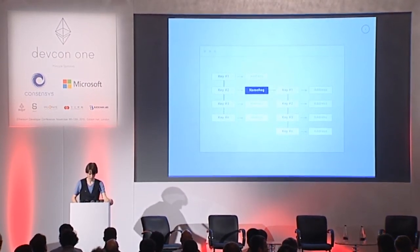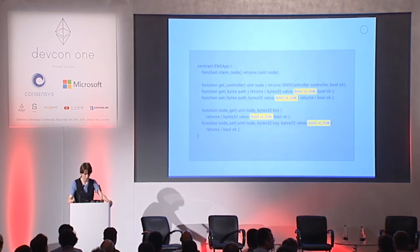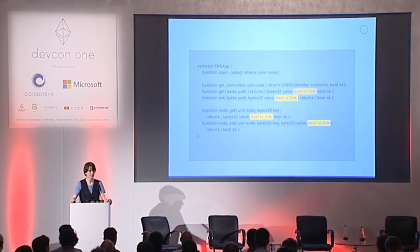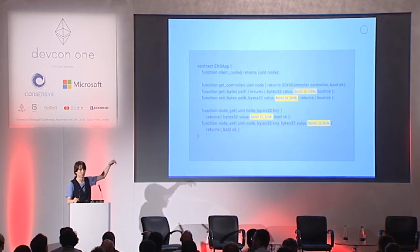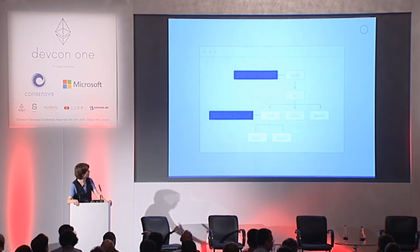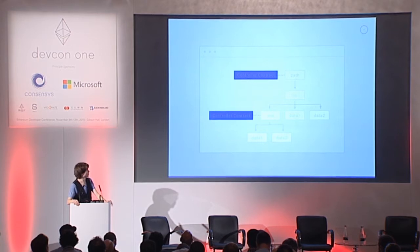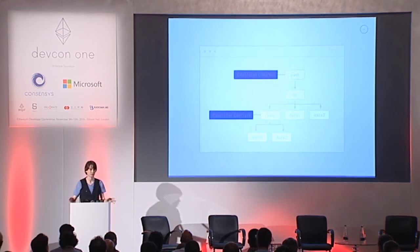To resolve the first problem, all of our getters and setters on our ENS app interface return and accept a boolean called isLink, which explicitly defines whether the data stored at a particular path should be considered a pointer to another node in the tree. The second problem of not having a standardized permission interface, we solved by making a standardized permission interface we call the controller contract, and you can set those on any node in the tree.